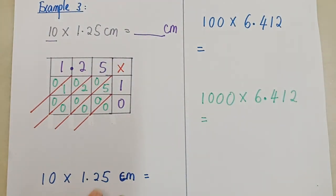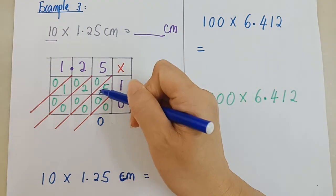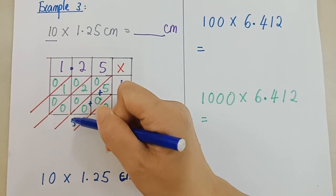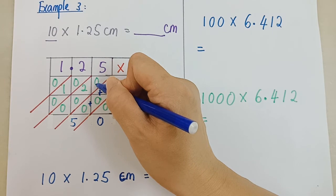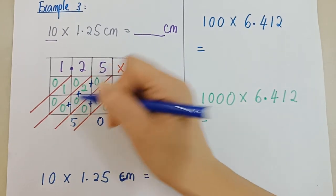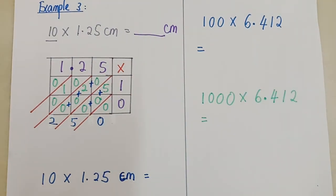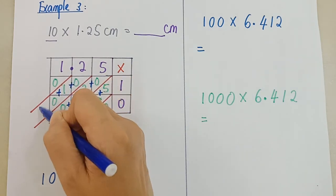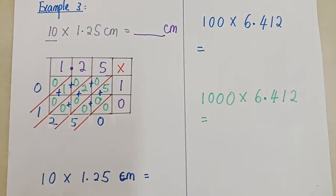Sekarang, tambah ikut lorong. Lorong pertama, 0. Lorong kedua, 5 plus 0 plus 0. You get 5. Lorong ini, 0 plus 2 plus 0 plus 0. So it's 2. Lorong ini pula, 0 plus 1 plus 0 is 1. Yang depan ini ialah 0.